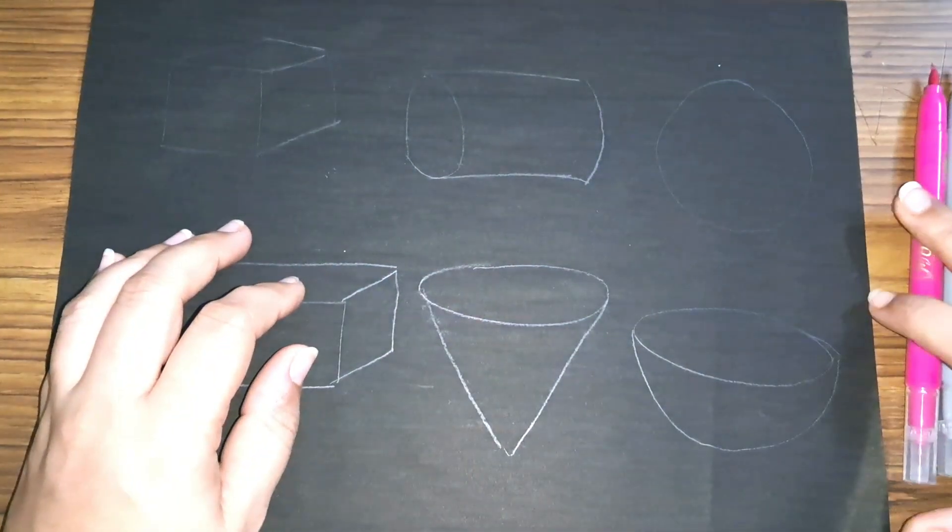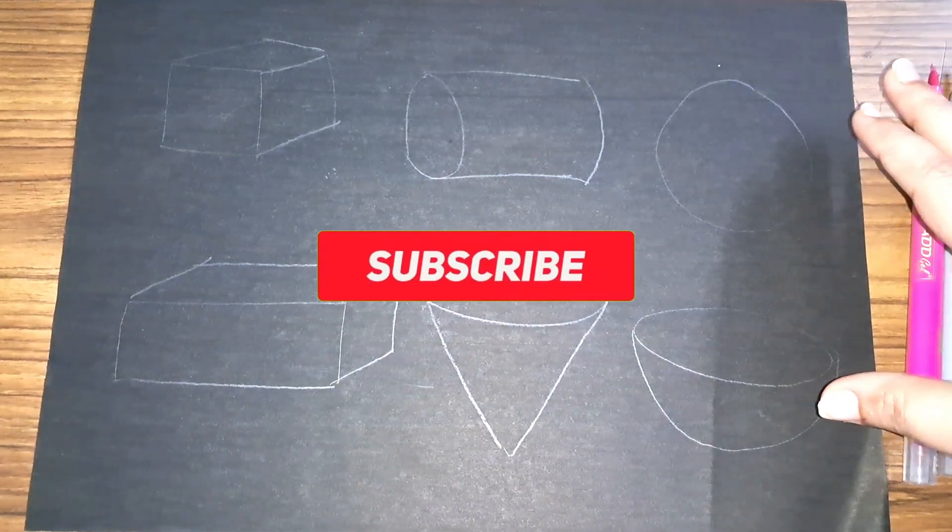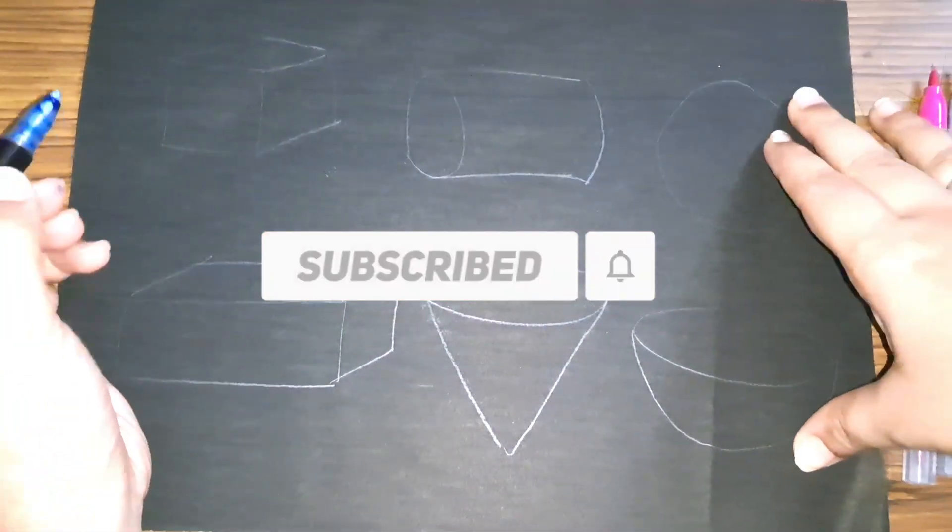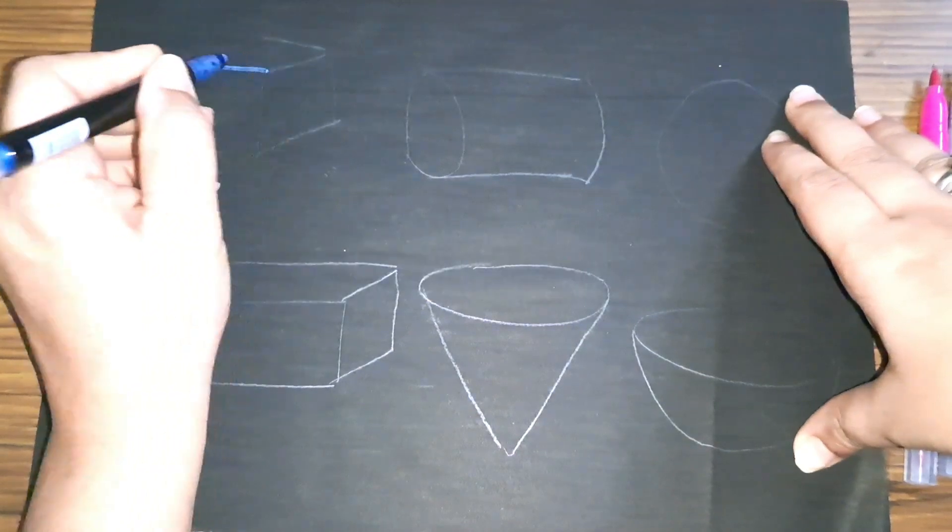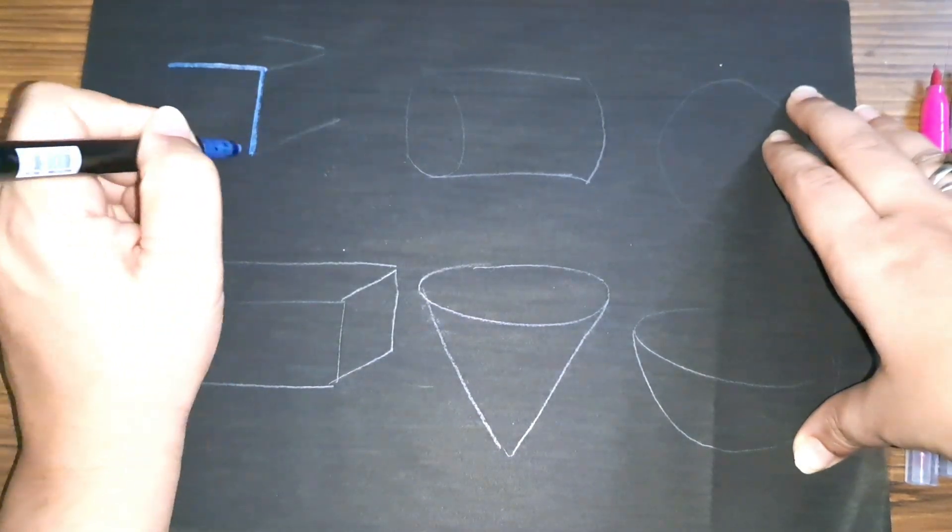3D shapes. 3D means three dimensional. 3D shapes. Let us draw the shapes first.